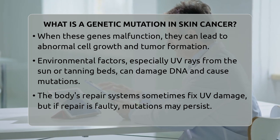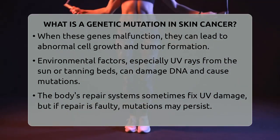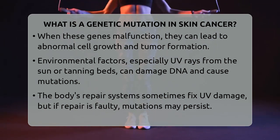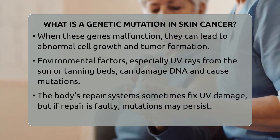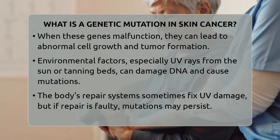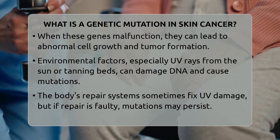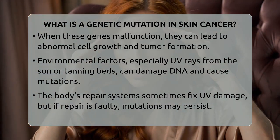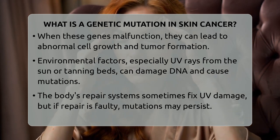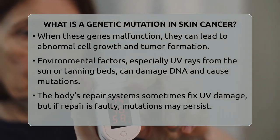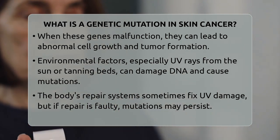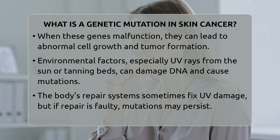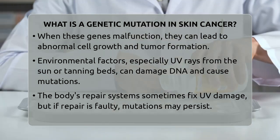This imbalance results in the formation of abnormal cell clusters, or tumors, which may develop into skin cancer. Environmental factors play a big role in causing these mutations. Ultraviolet rays from the sun or tanning beds can damage the DNA in skin cells. While the body has repair mechanisms to fix this damage, sometimes the repair is incomplete or faulty. If the damage occurs in critical genes involved in cell regulation, it can lead to mutations that persist and promote cancer development.